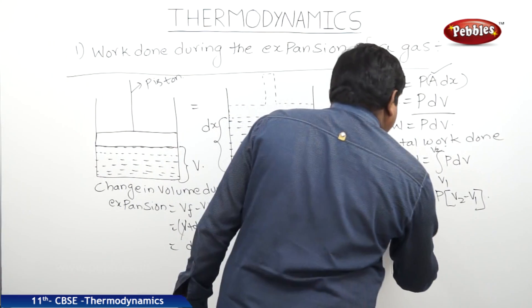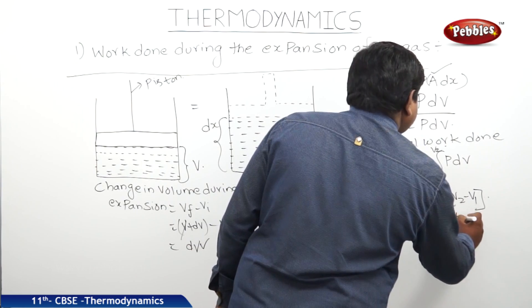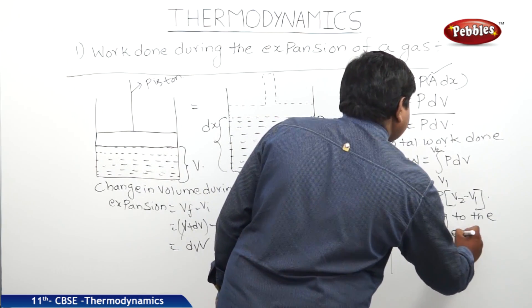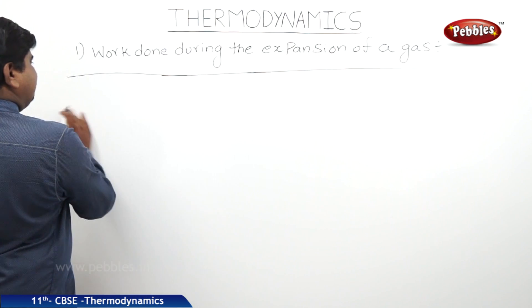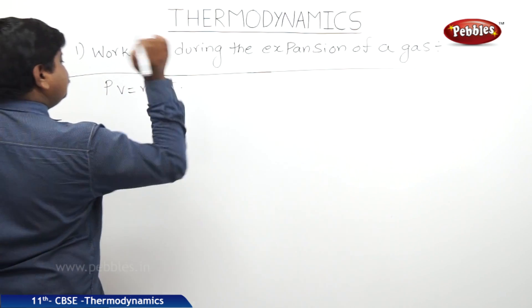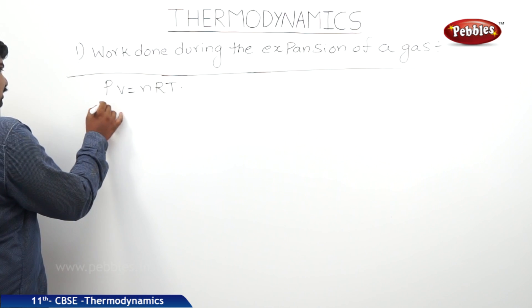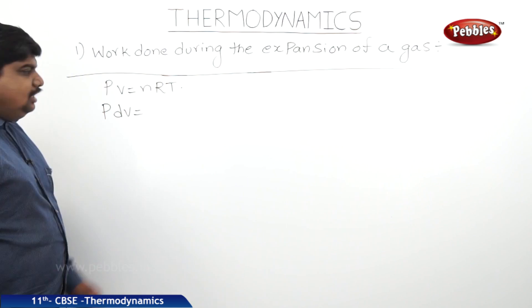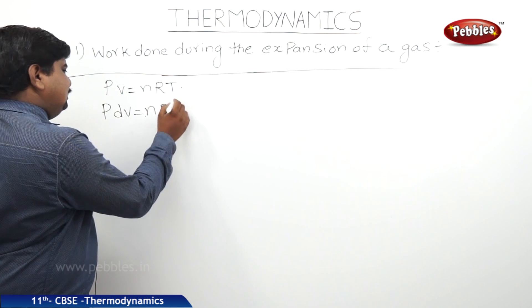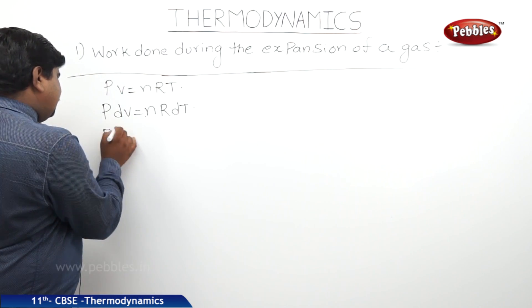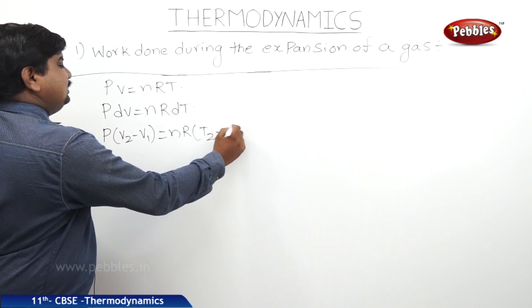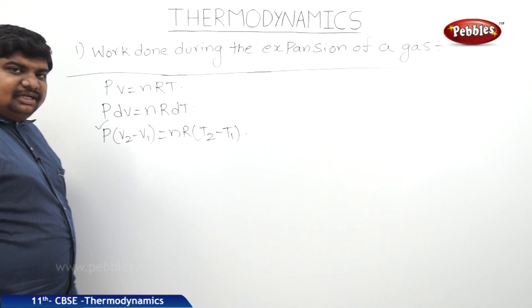We can say that according to the ideal gas equation, PV equals nRT. But here we got P dV. If volume varies with respect to temperature, then we can write nR dT also. dV means we are writing P into V2 minus V1 equals nR into T2 minus T1. This is the work done during the expansion.